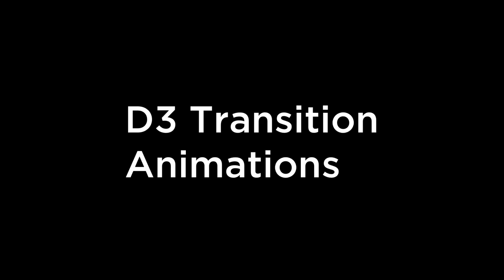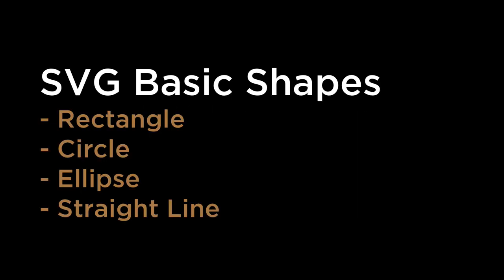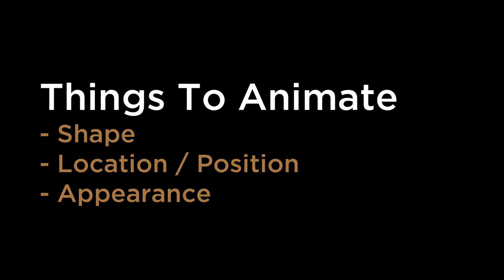D3 Transition Animations. For each SVG Basic Shape, we will go through an example of animating two of the inputs of each shape. When thinking about animations, it is helpful to think of three types of things you can change: you can change its shape (larger, smaller, wider, narrower, skewed), you can change where it's drawn (near the origin or elsewhere in the X, Y coordinate space), and you can change its appearance (color and opacity). You can mix and match to make interesting animations. For the examples, we will stick with mainly shape and location position.